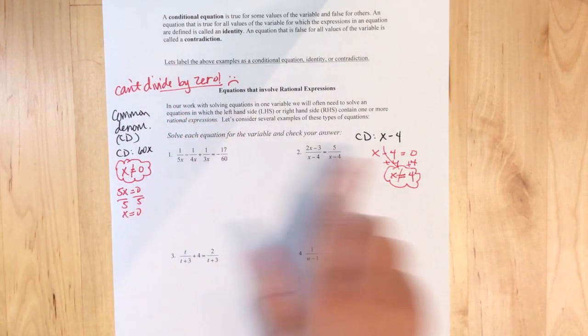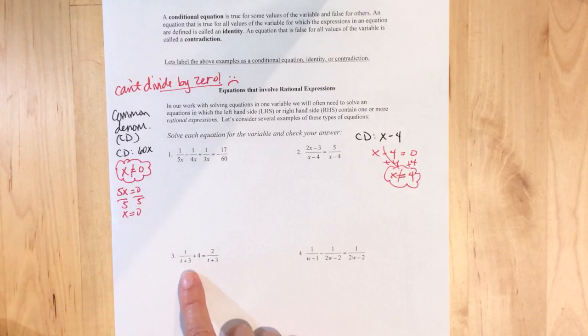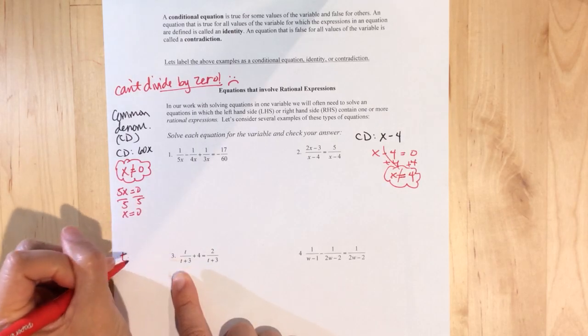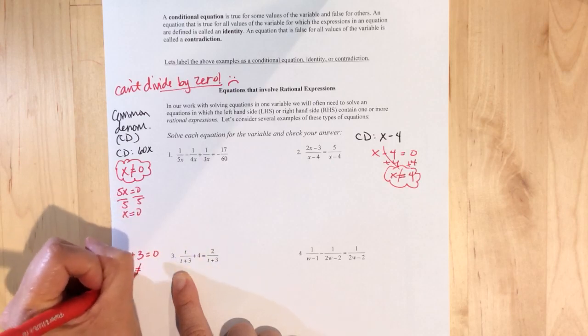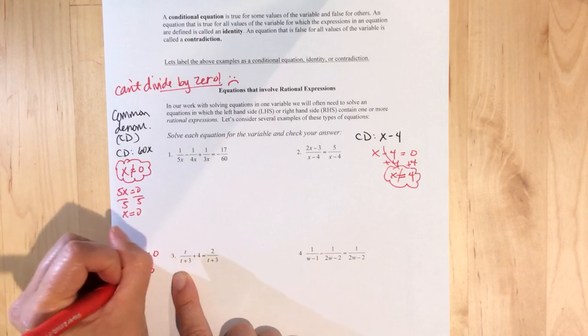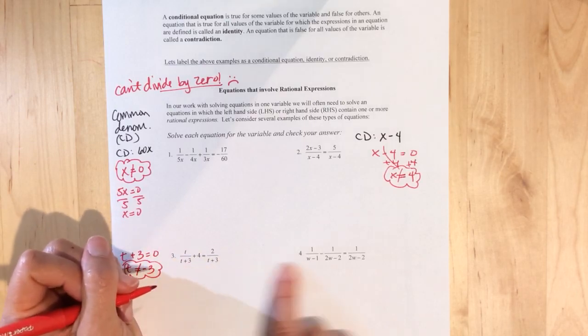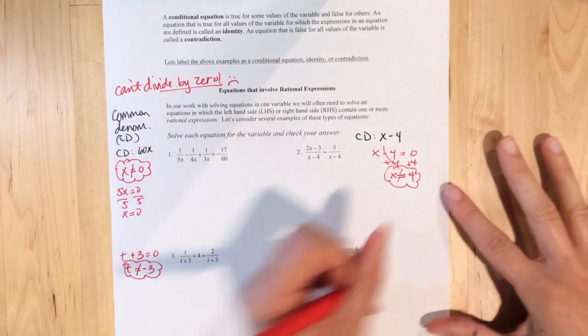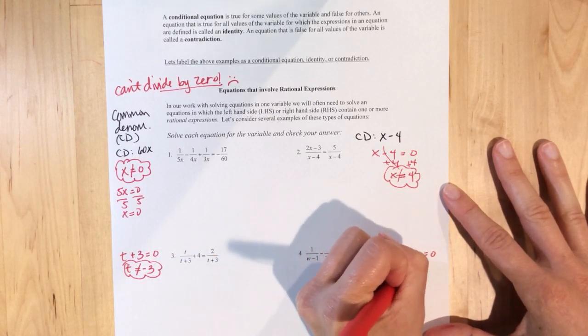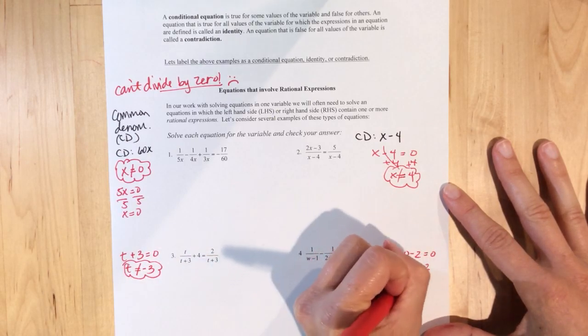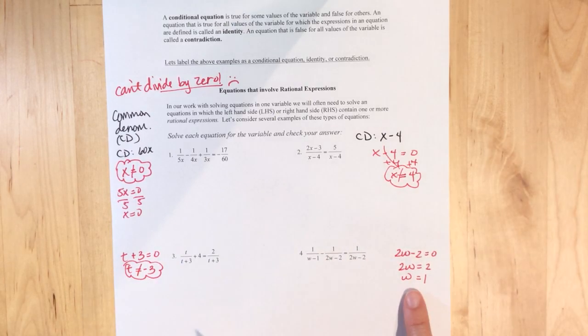So like I said, I like to leave myself little breadcrumbs. So what's the number we can't divide by with three? So if the denominator is T plus three equaling zero, T cannot equal negative three. For four, if I've got two W minus two equal to zero, add the two, divide by two, W equals one.